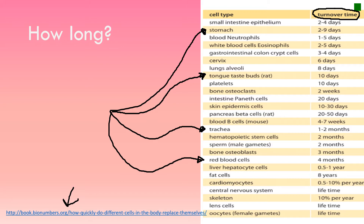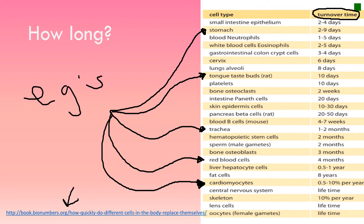Red blood cells take four months to completely refresh. Cardiomyocytes, which are muscle cells in the heart, were originally thought not to replenish themselves, but you can see that 0.5 to 10% per year actually does refresh. Cells obviously take different amounts of time to replenish the whole system. When explaining the importance of mitosis, you could use these examples to show how important it really is for the human body.